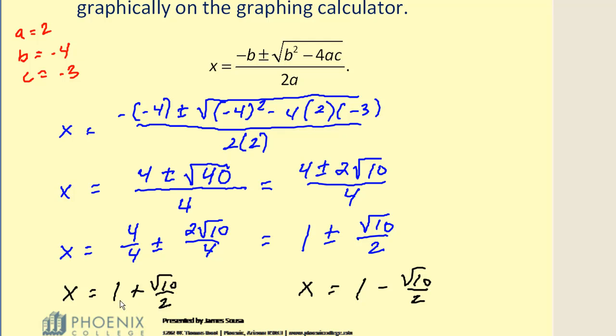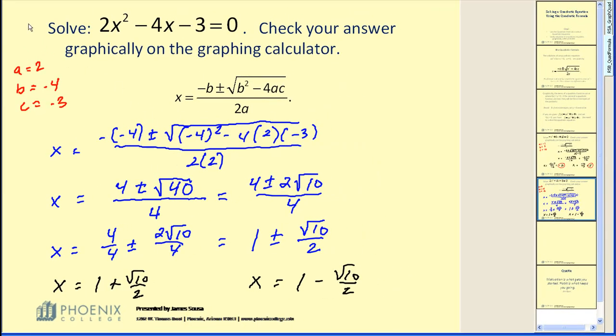Now, it would be very difficult to try to verify these values as x-intercepts because they're irrational. So I've already taken the time to convert them into a decimal, and this would be approximately 2.58, and this would be approximately negative 0.58. These are the values we will look to see if these are our x-intercepts.